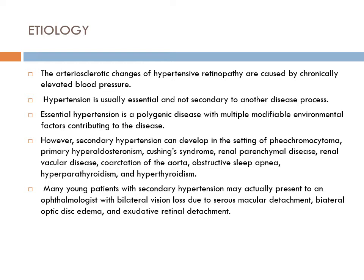Essential hypertension is a polygenic disease with multiple modifiable environmental factors contributing to the disease. It is mainly seen after age 40 and is associated with obese individuals, smokers, and may be associated with diabetes.